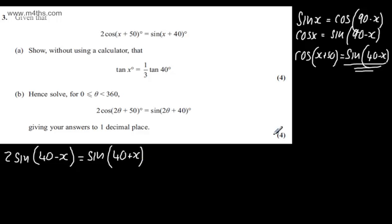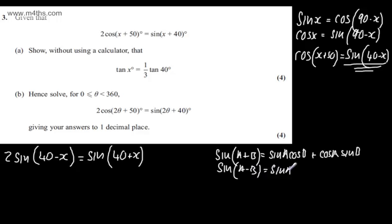Let's now go to some addition formulae. We know that sin(A + B) equals sin(A)cos(B) + cos(A)sin(B). If I now have sin(A - B), this is going to give me sin(A)cos(B) minus cos(A)sin(B). That's why I'm writing this as 40 + x rather than x + 40, just to make the work slightly easier.